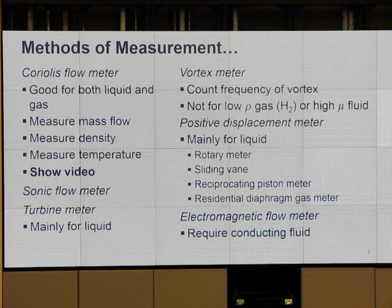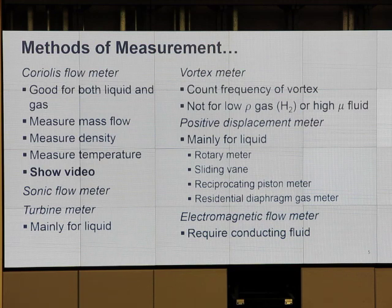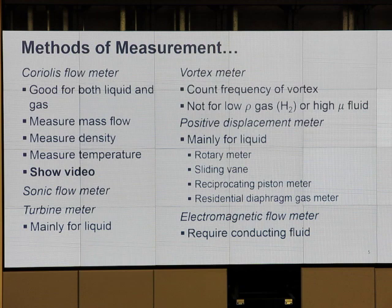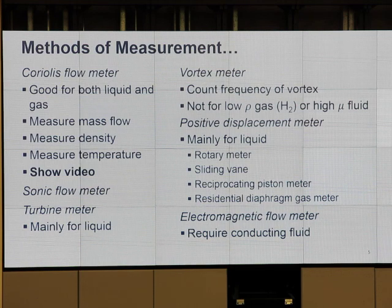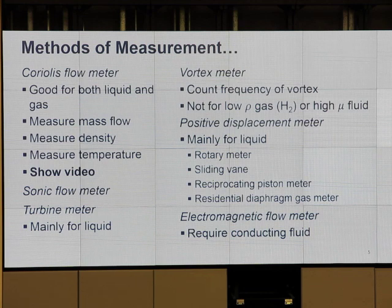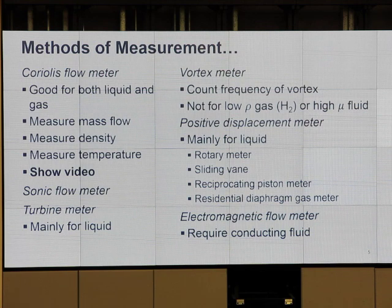For high flow rates, the common flow meters are Coriolis and AO Smith. The key thing about the Coriolis flow meter: it measures mass flow rate directly. In addition, it measures density. Based on mass flow rate and density, we can calculate volumetric flow rate. If you know mass flow rate of gas, can you calculate standard cubic feet per day?